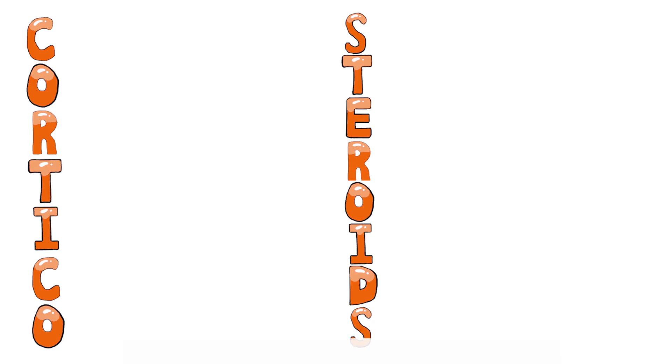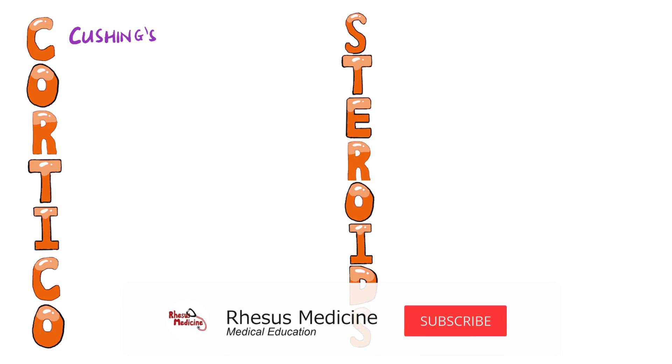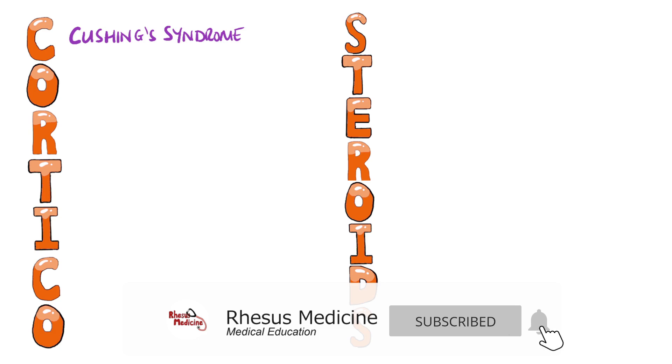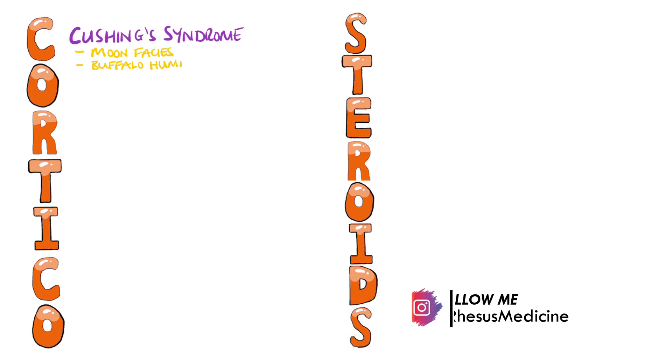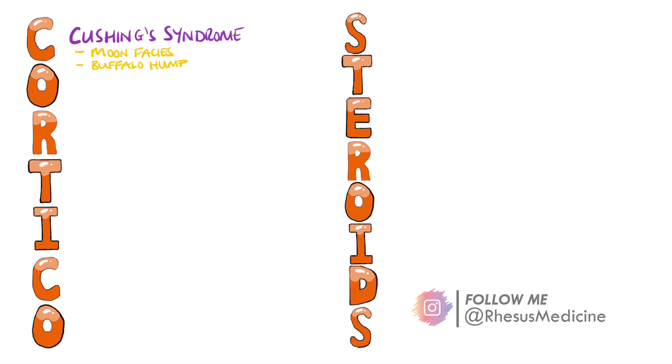Corticosteroids can cause many different side effects, so the mnemonic CORTICOSTEROIDS should help you remember them better. The first C stands for Cushing syndrome, which will include a lot of the following side effects as well as things like moon face and buffalo hump.